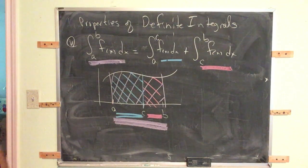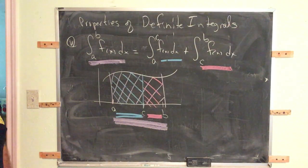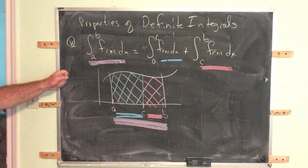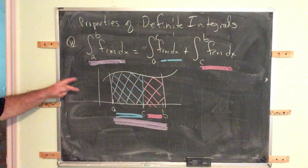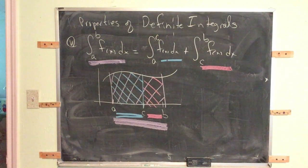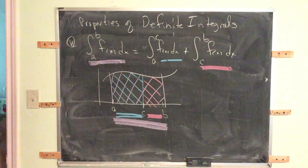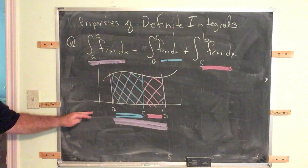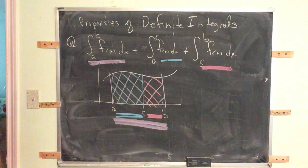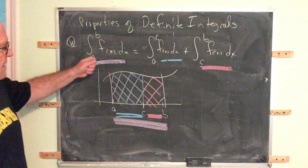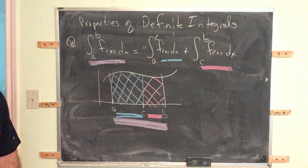So those are the properties of integrals. There are two properties inherited from antiderivatives: constant multipliers multiply along, and the integral of the sum is the sum of the integrals. Then, the integral from A to A equals zero; interchanging limits of integration gives the opposite sign; and the whole equals the sum of the parts — the additive interval property. Those are the basic properties of integrals.